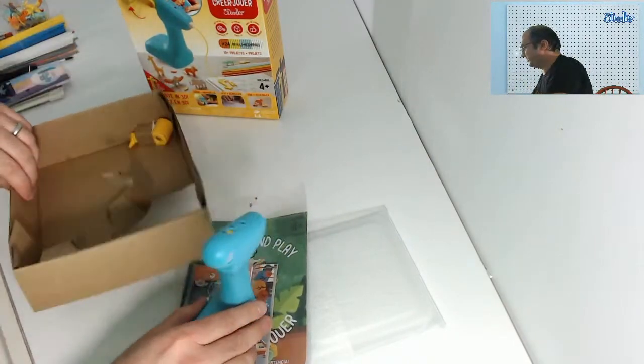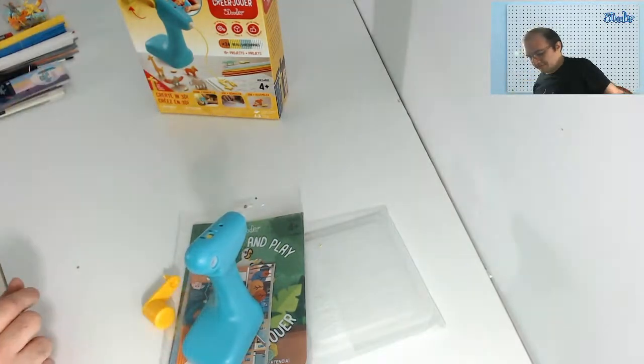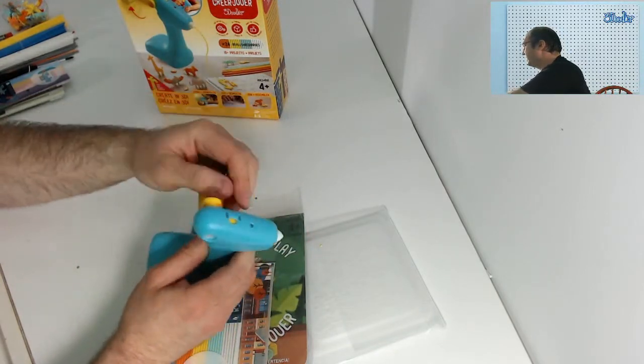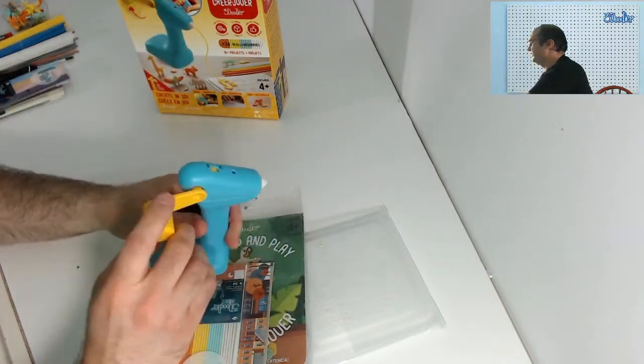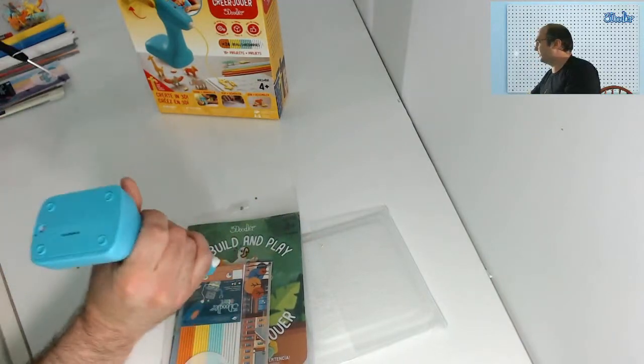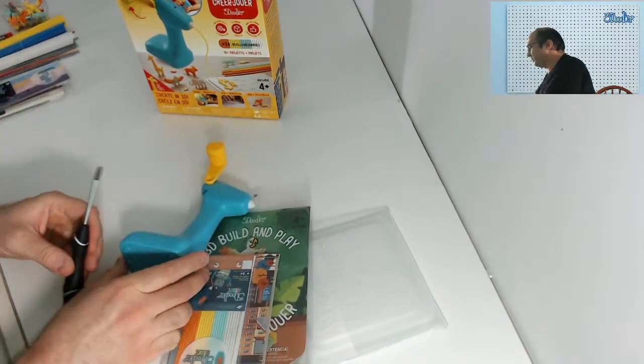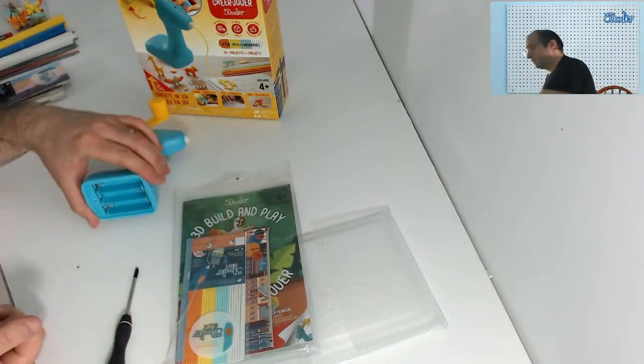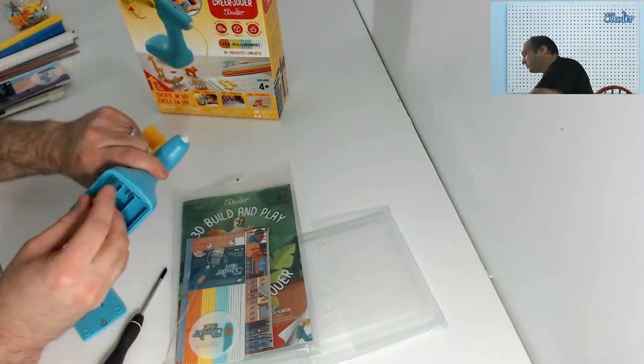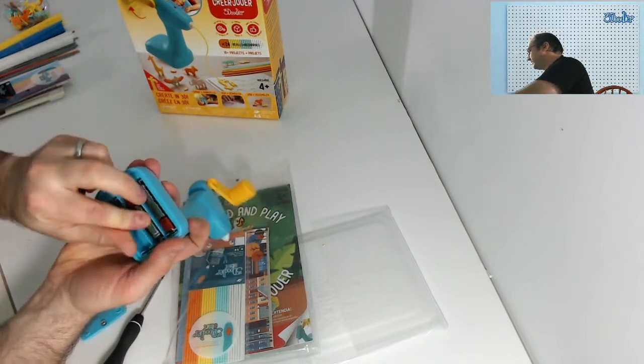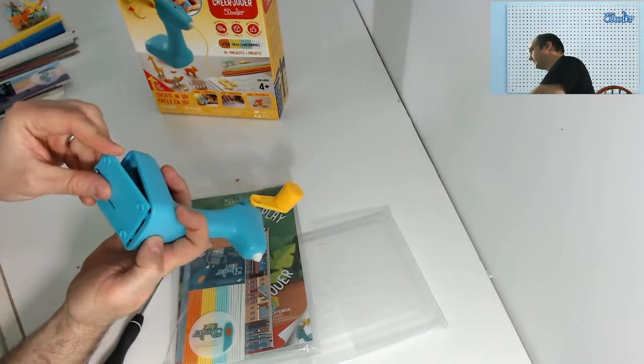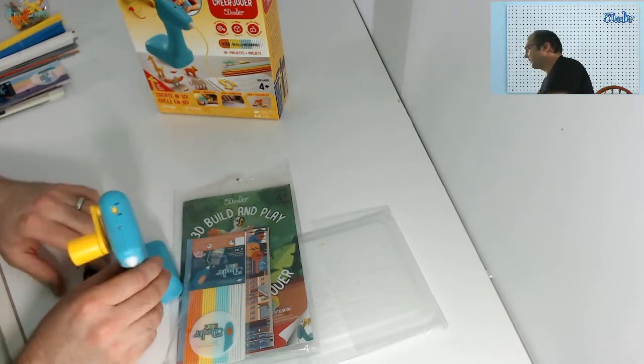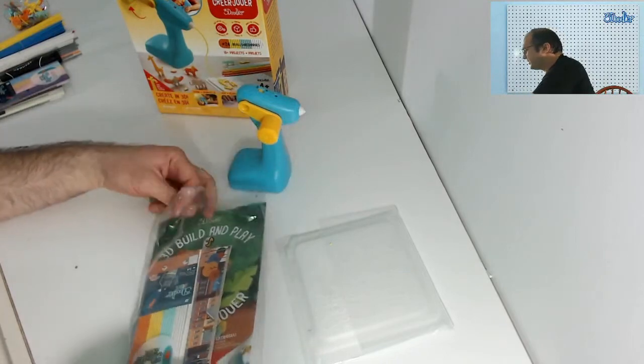We have the handle. The wonderful thing about the Build and Play is it's good for lefties and righties. The handle simply slides in like so, crank it, or you can pop it out and pop it in. It does require batteries. You need three triple A's. You can also use rechargeable batteries, rechargeable triple A's.